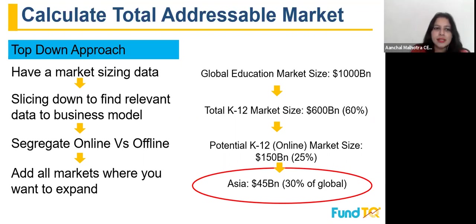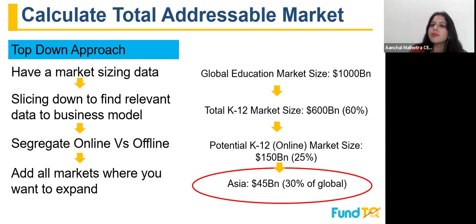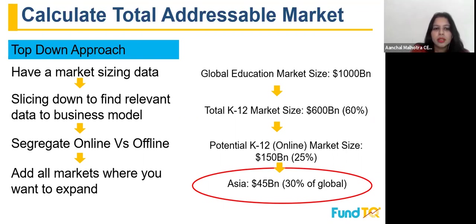You have market sizing data and you slice it down to find the relevant data for your business model. You segregate online and offline — for technology-based companies, if internet penetration is not present in certain areas, that won't be your total addressable market. Then you add all the markets, all the sectors, all the countries where you want to expand.